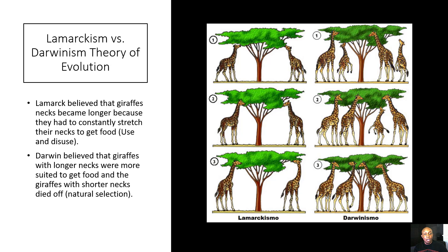Let's take a look at Lamarckism versus Darwinism. Lamarck believed that giraffes' necks became longer because they had to constantly stretch their necks to get food through use and disuse. He literally believed that a giraffe throughout its lifetime could make its neck longer by constantly stretching to get food, so that by the time a giraffe got much older, its neck became longer. We know this theory of evolution ultimately proved to be wrong.